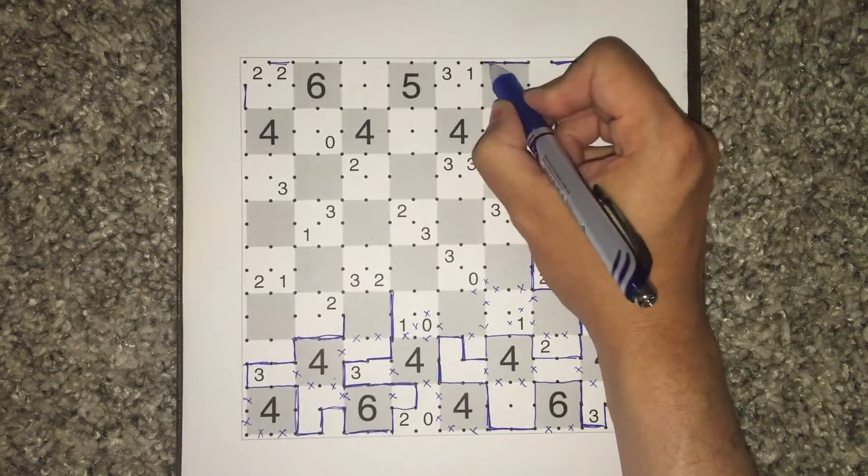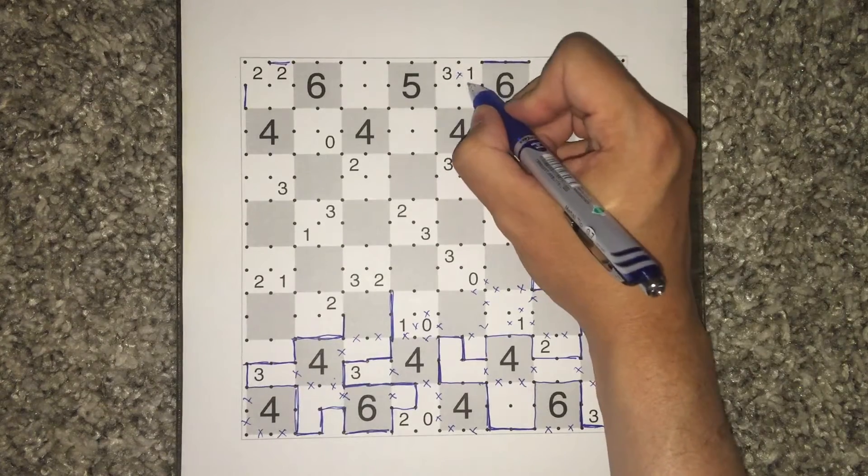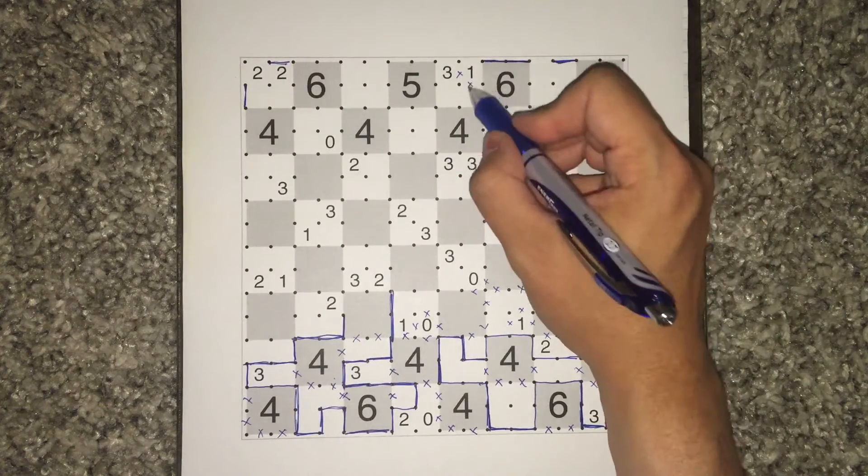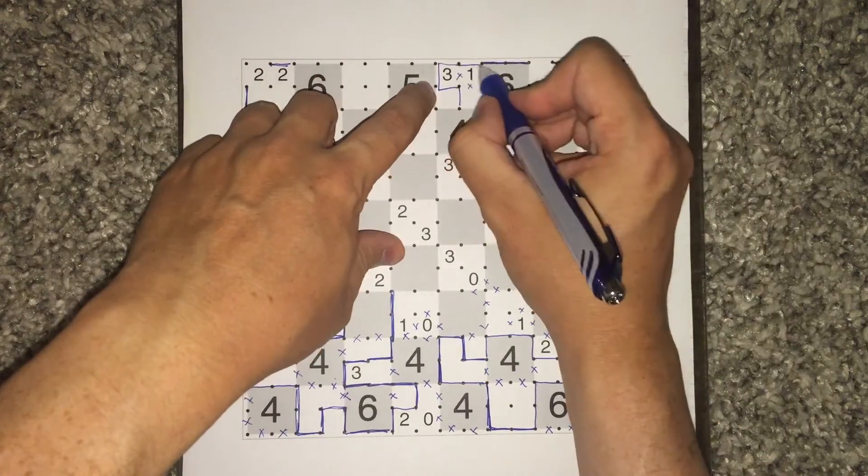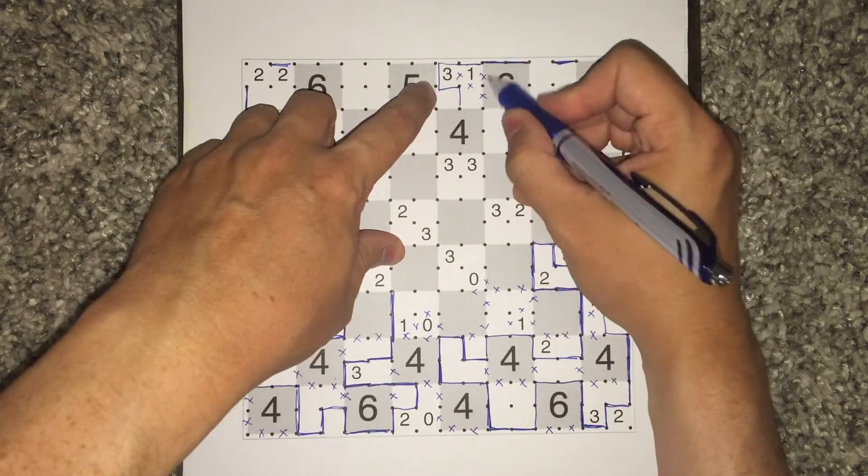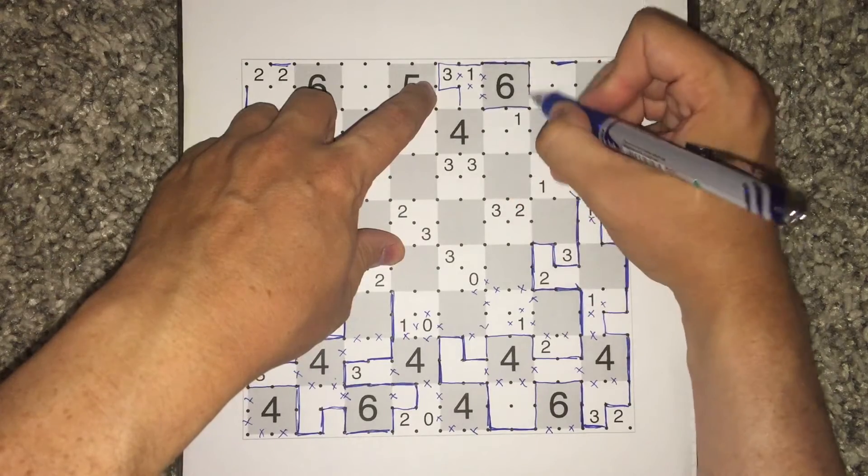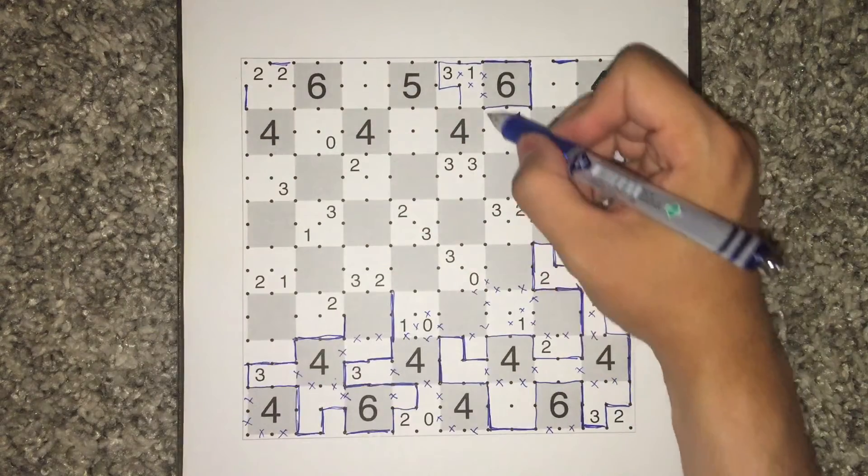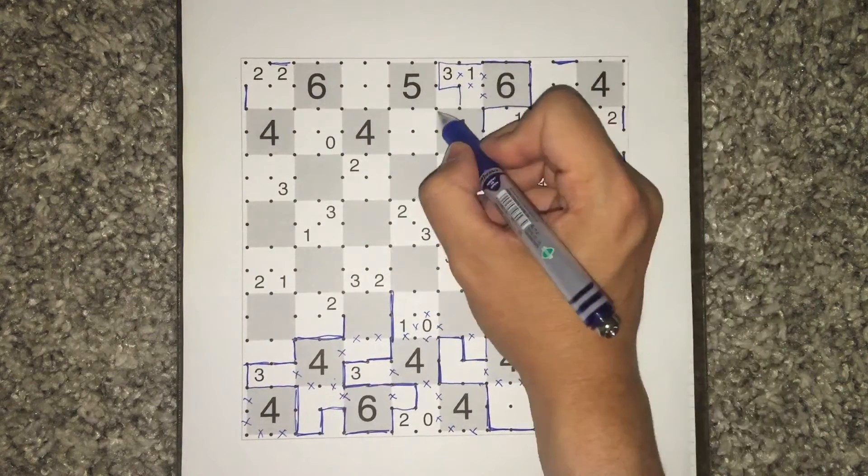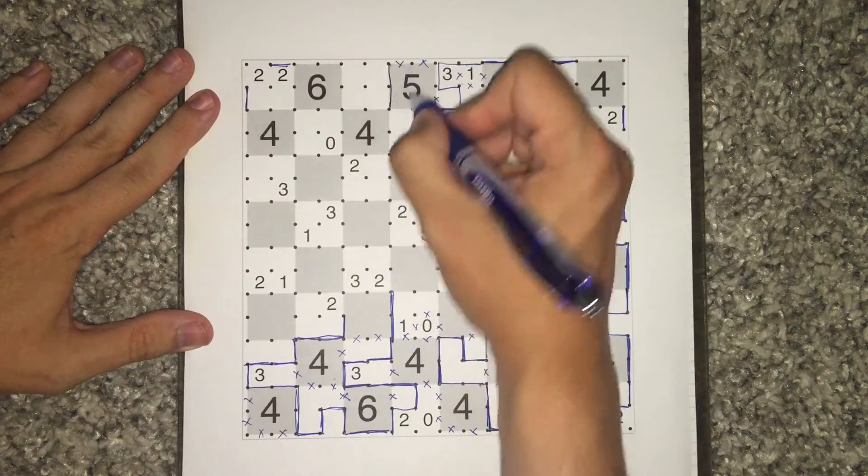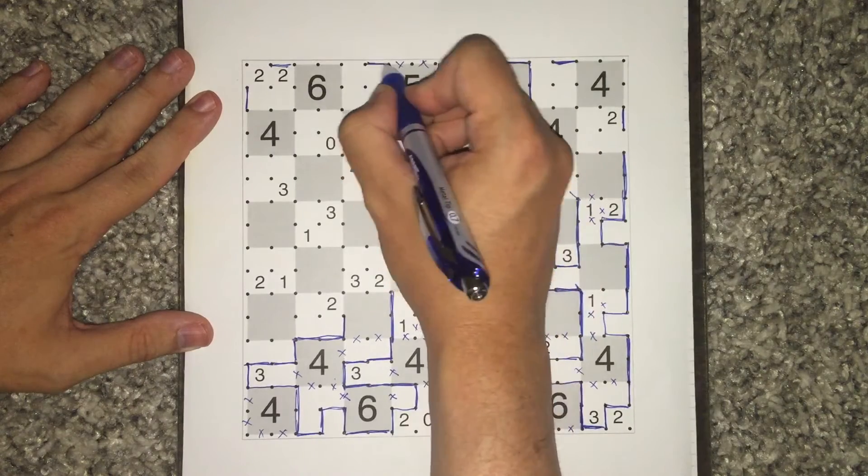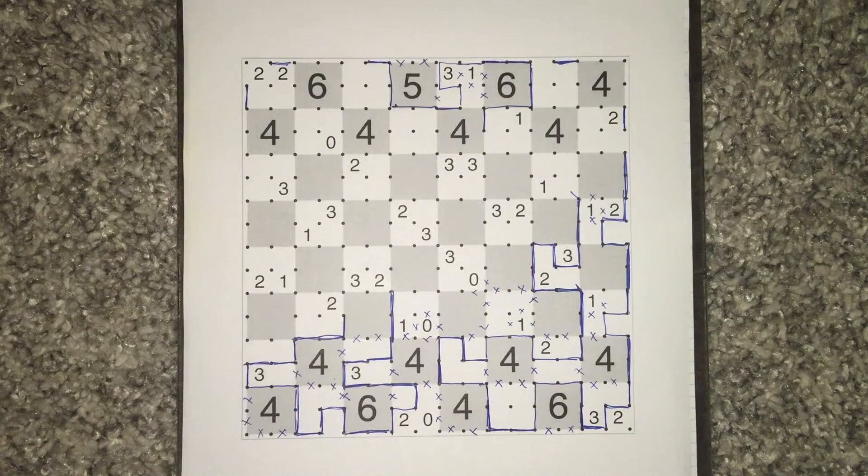Once we mark that in, the deduction around the one, three cell, gives us very quickly the parts of the sixes that aren't being used. These ends can't touch. And if we look around the five, we already have the three unused segments marked. So we get this kind of quick progress.